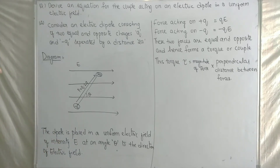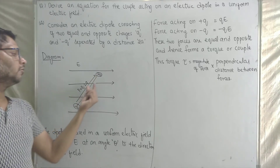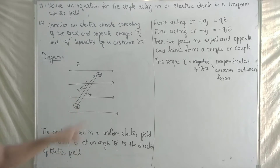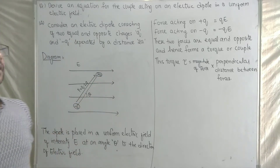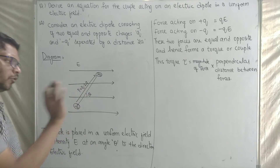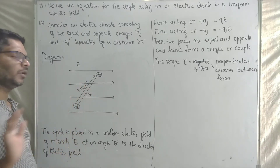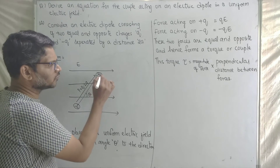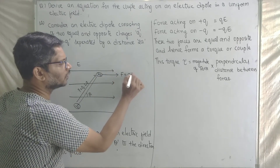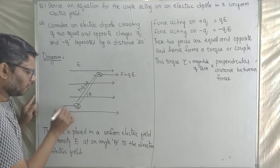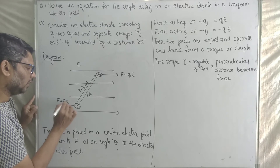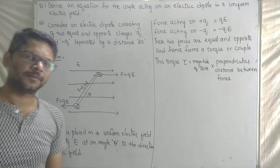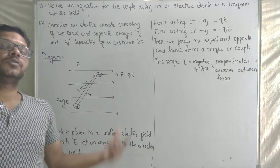The dipole moment direction is from negative charge to positive charge. The force acting on the positive charge plus Q is equal to QE. Likewise, the force on minus Q is also equal to QE in magnitude. These two forces are equal in magnitude but act in opposite directions.